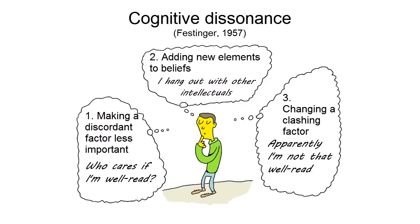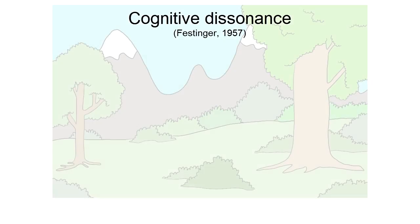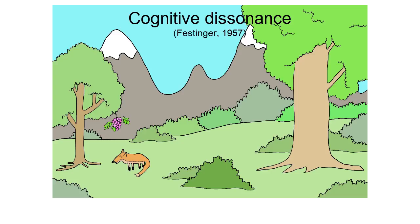The theory explains how people balance their beliefs with reality. Sometimes this can lead to enormous opinion changes. The classic example of this is the Fable of the Fox and the Grapes by Aesop.